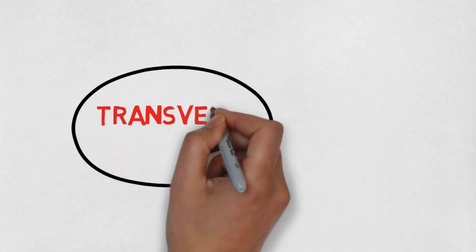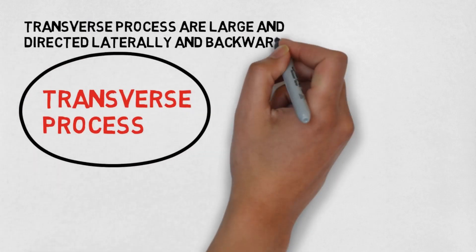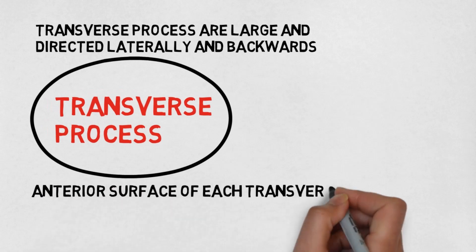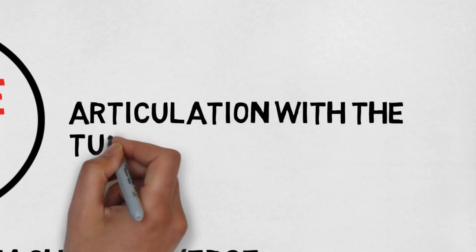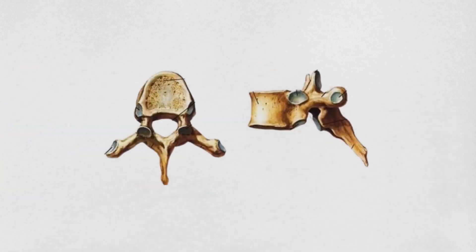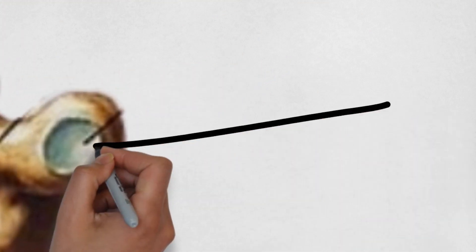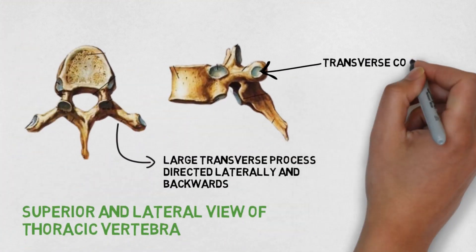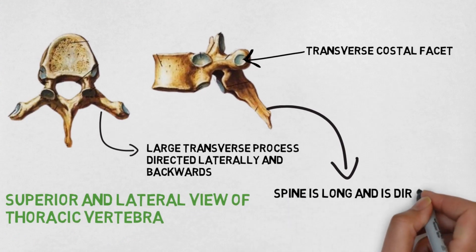Now let's see the characteristics of the transverse process. The transverse processes are large and are directed laterally and backwards. The anterior surface of each transverse process bears transverse costal facets near its tip, and these are present for articulation with the tubercle of the rib. This is the superior and lateral view of the thoracic vertebra. This large process is the transverse process directed laterally and backwards. This is the transverse costal facet for attachment with the tubercle of the rib. And this is the spinous process, which is long and is directed downwards and backwards.